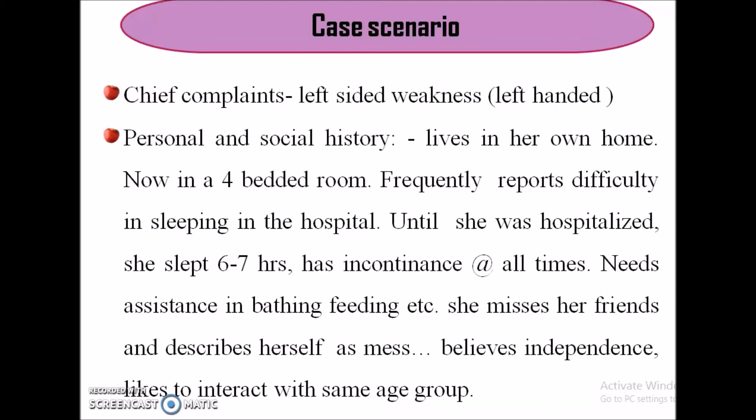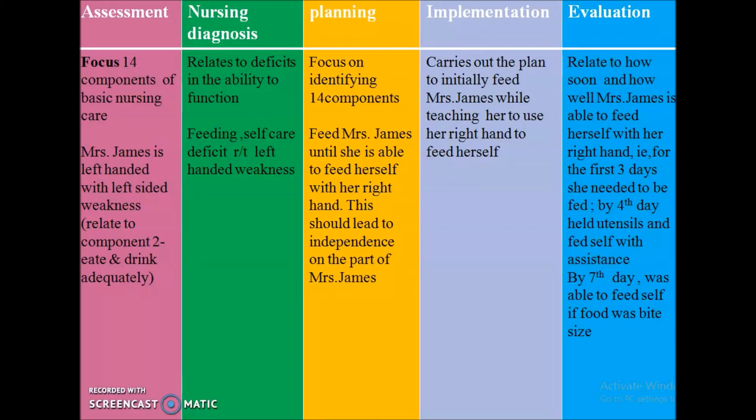Her chief complaints are left-sided weakness, and she is also a left-handed person. She lives in her own home but now needs to stay in a four-bedded room. She frequently reports difficulty sleeping after hospital admission — previously she slept six to seven hours. She needs assistance in bathing and feeding, misses her friends, describes herself as a mess, and believes in independence. She likes to interact with people of the same age group.